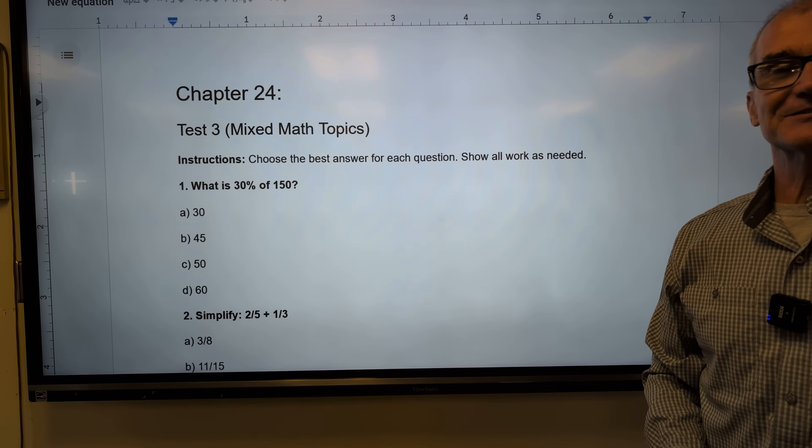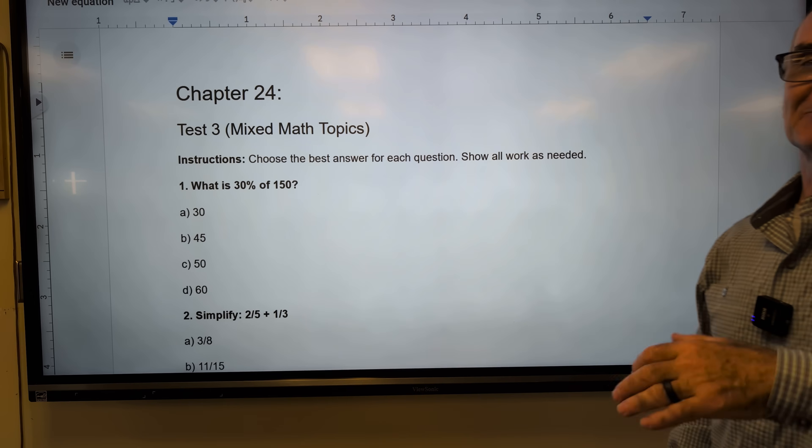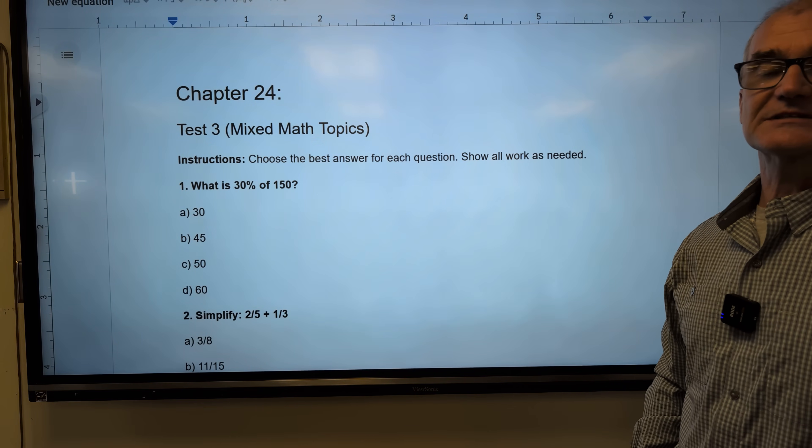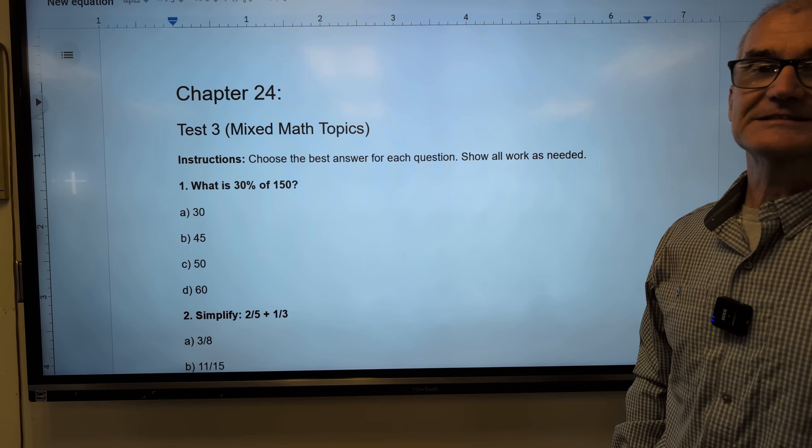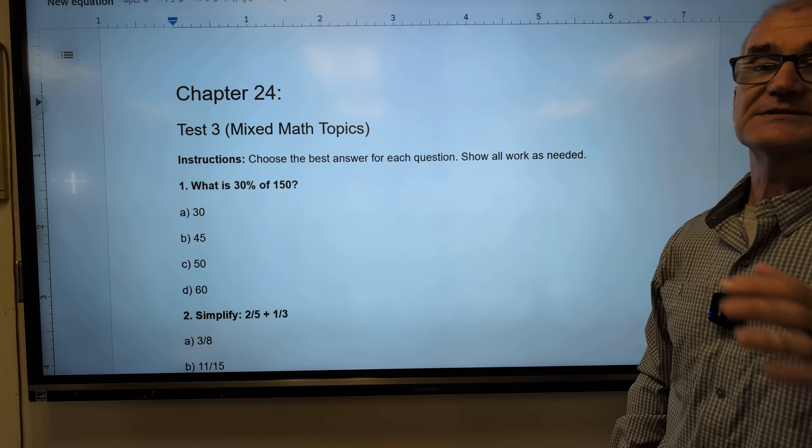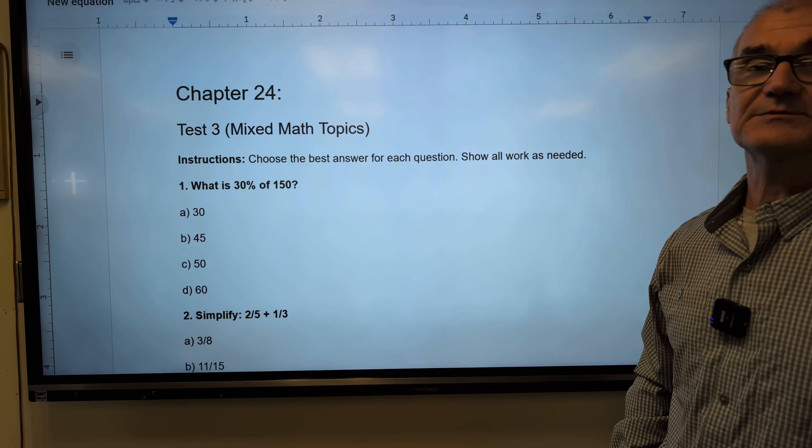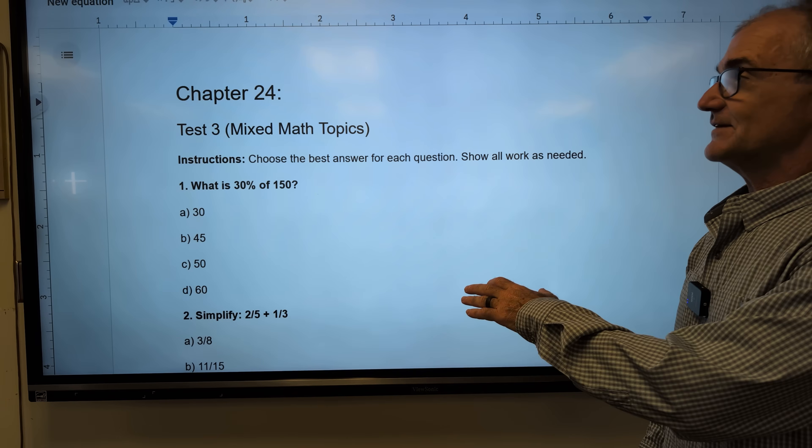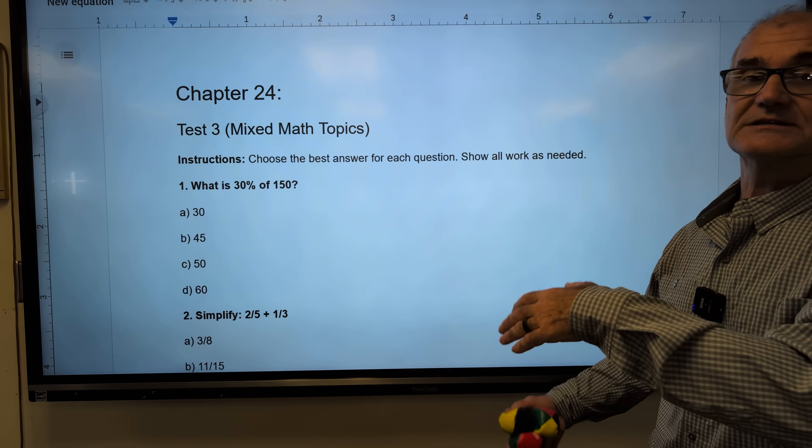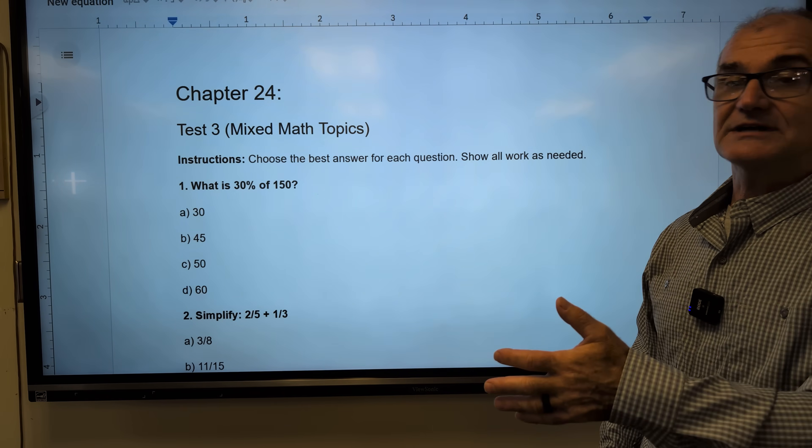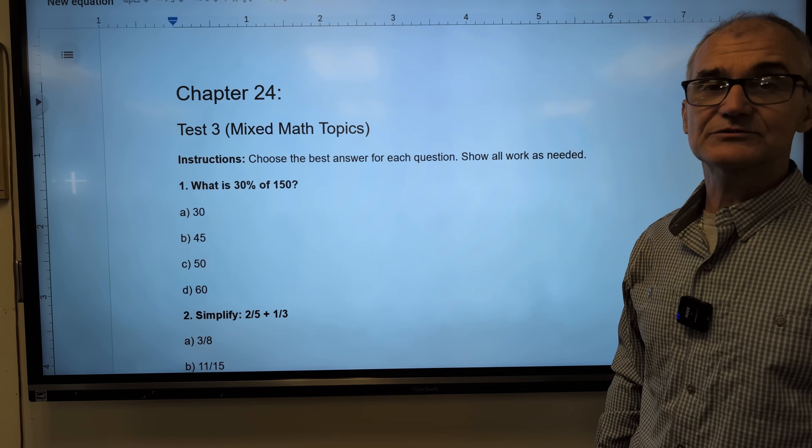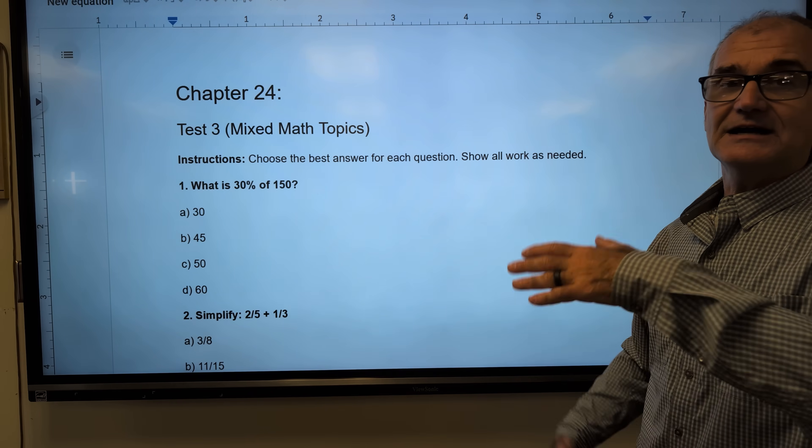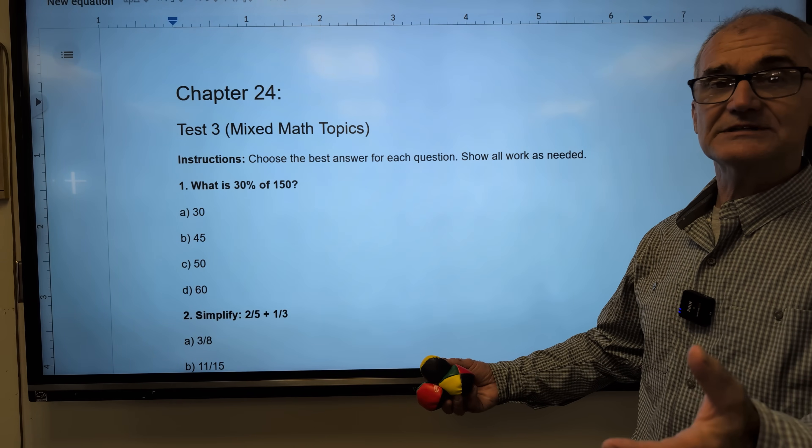Hey fellow problem solvers, Colfax Math here. Today we're working on Math Test Success, Chapter 24, so you could be as successful as possible on any standardized math exam, specifically the ASVAB Military Placement Exam, Arithmetic Reasoning and Mathematical Knowledge. This is a final test for this book. It is a mixed review of different topics of all of the previous 20 chapters or so. Hopefully you've gone through all of those chapters and now you're taking a final exam or a test.